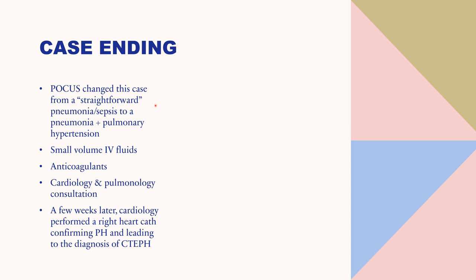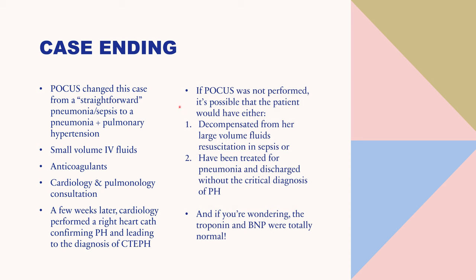POCUS was game-changing in this case — it changed management from straightforward pneumonia and sepsis to pneumonia with pulmonary hypertension. The patient had 30 cc/kg of IV fluids ordered from triage; my colleague changed it to a small volume because of the pulmonary hypertension. The patient received anticoagulants for the PEs found on CT, and cardiology and pulmonology were consulted. Cardiology performed a right heart catheterization — the gold standard — leading to the diagnosis of pulmonary hypertension and CTEPH. Without POCUS, the patient could have decompensated from large-volume IV fluids or been discharged home without the critical diagnosis. Notably, the troponin and BNP were totally normal.